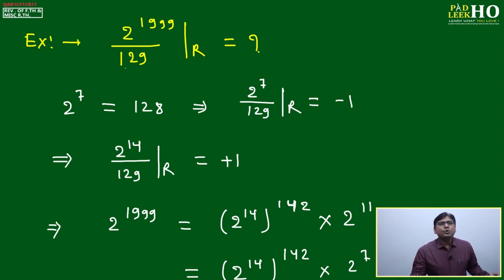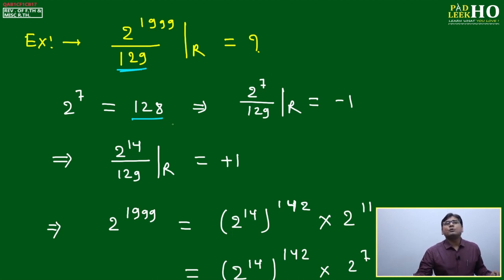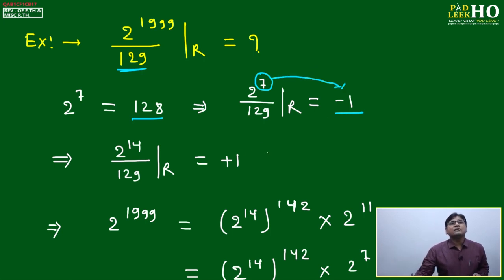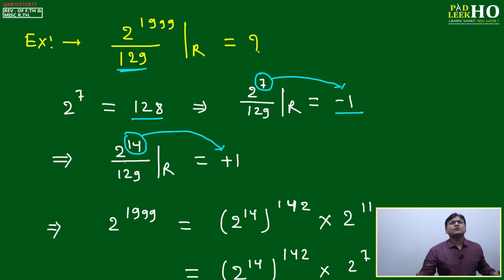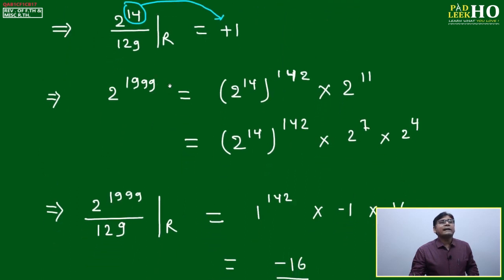Example: Find 2^1999 ÷ 129. The denominator is 129, which is near to 2^7 = 128. So 128 ÷ 129 gives remainder -1. The least power giving remainder -1 is 7. Then 2^14 gives remainder (-1) × (-1) = +1. So the least power giving +1 is 14.